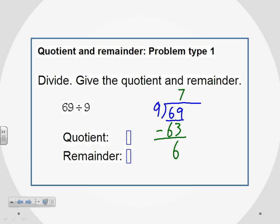Since we're asked for the quotient and the remainder, we're not going to continue with decimals. We actually already have both the quotient and the remainder here.